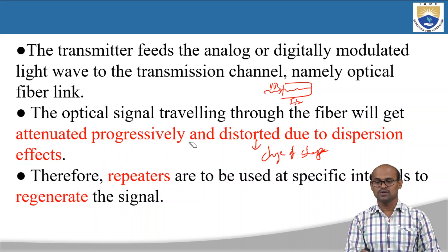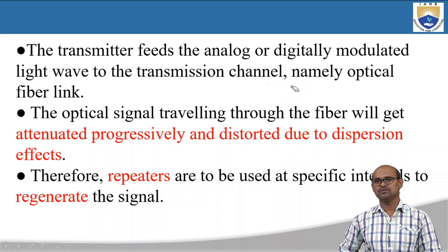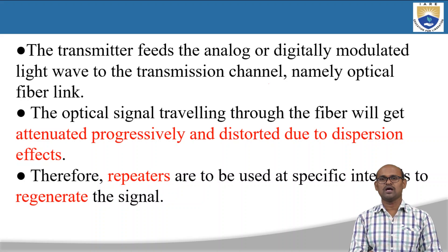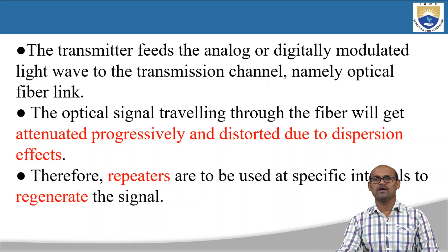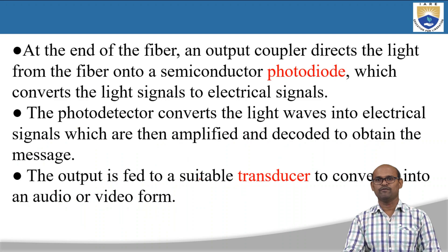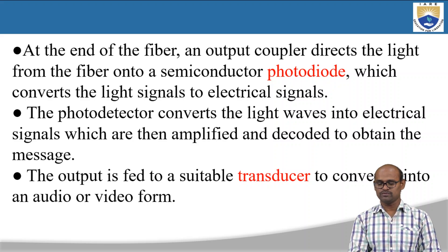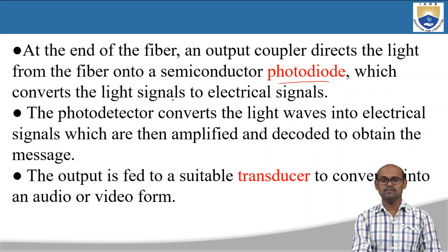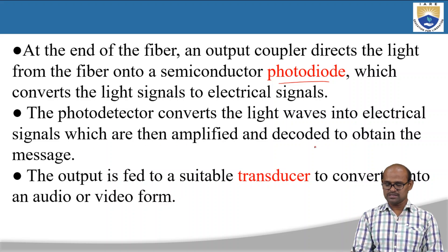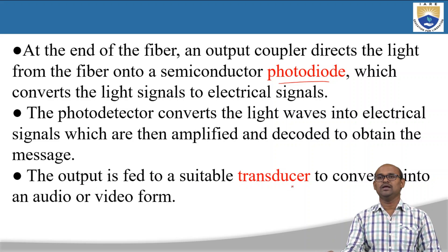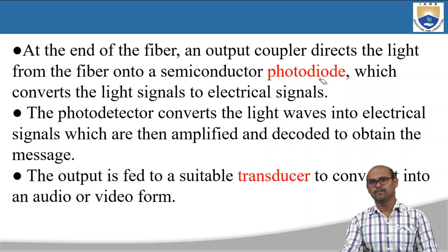Therefore, repeaters are used at specific intervals to regenerate the signal, as the light signal propagating through the optical fiber can suffer attenuation or distortion. At the end of the fiber, an output coupler directs the light from the fiber onto a semiconductor photodiode, which converts the light signal into electrical signal. The photodetector converts the light waves into electrical signals, which are then amplified and decoded to obtain the message. The output is fed to a suitable transducer to convert it into audio or video form.